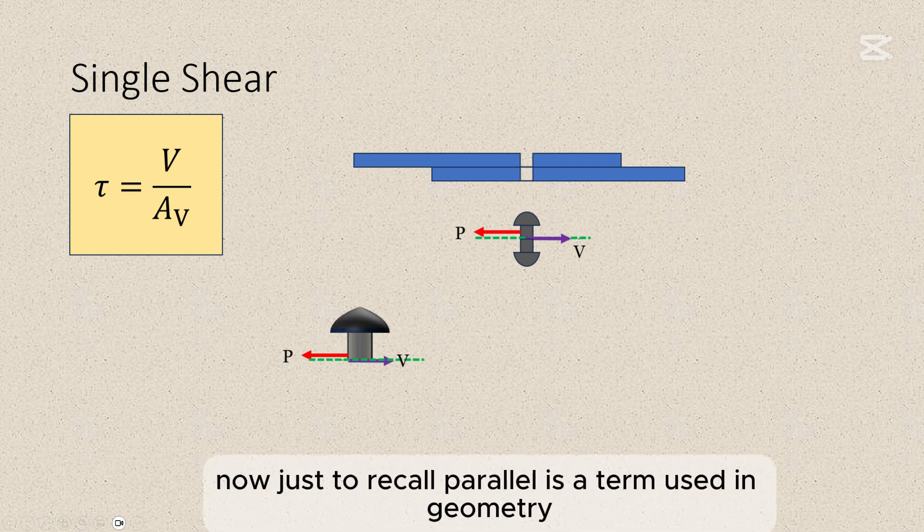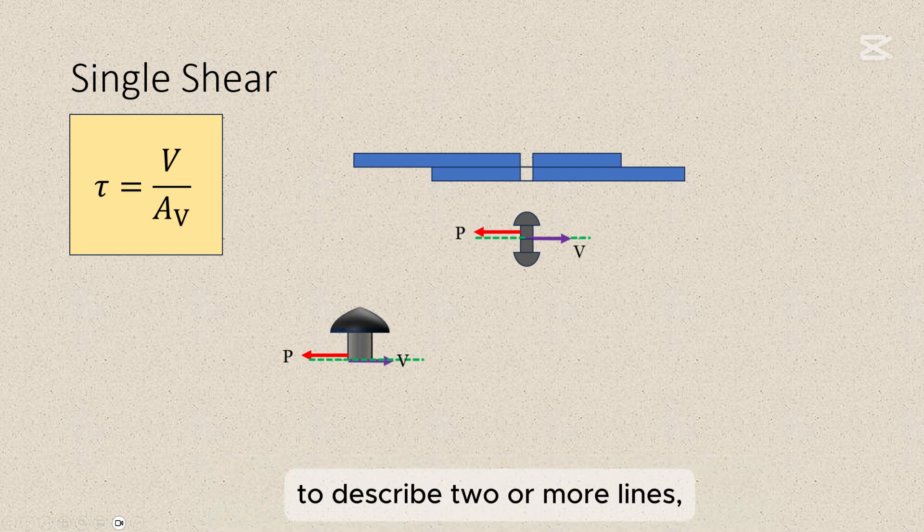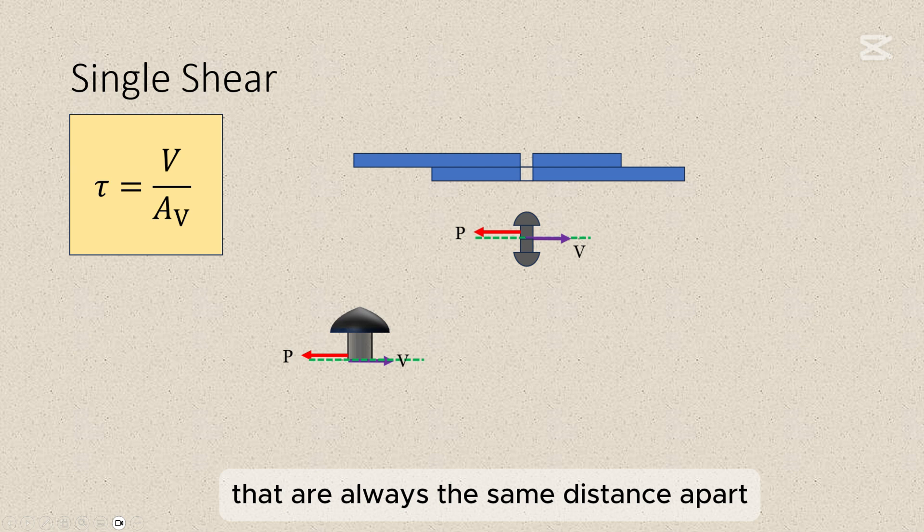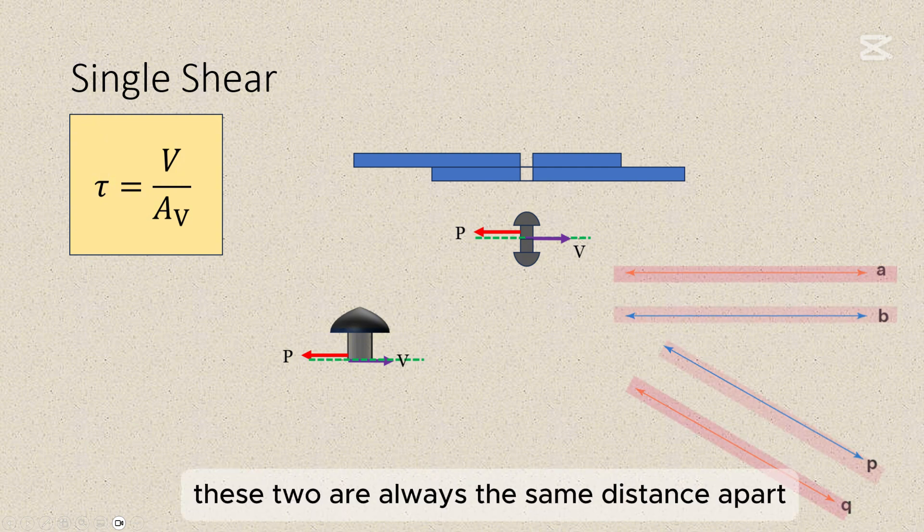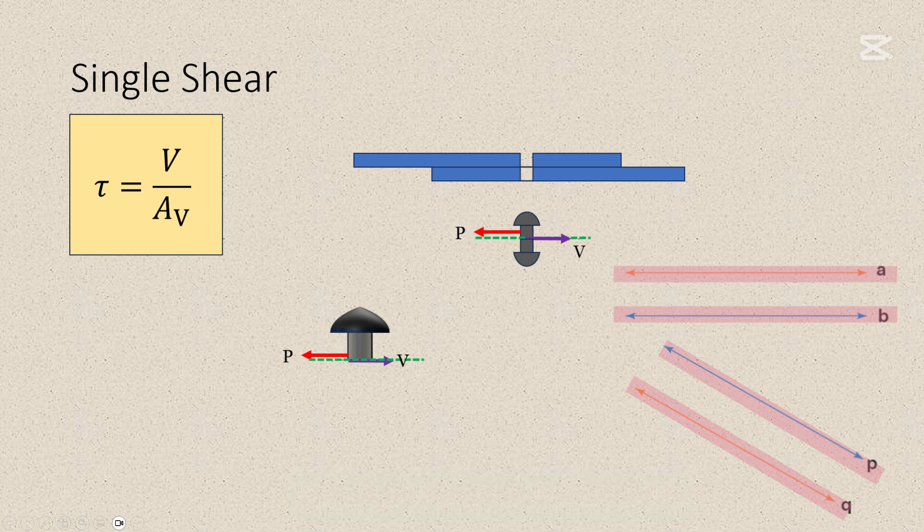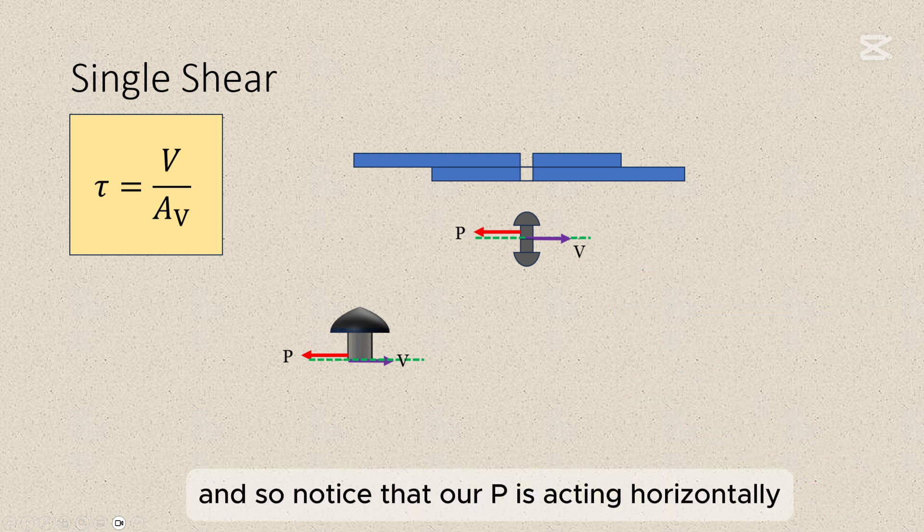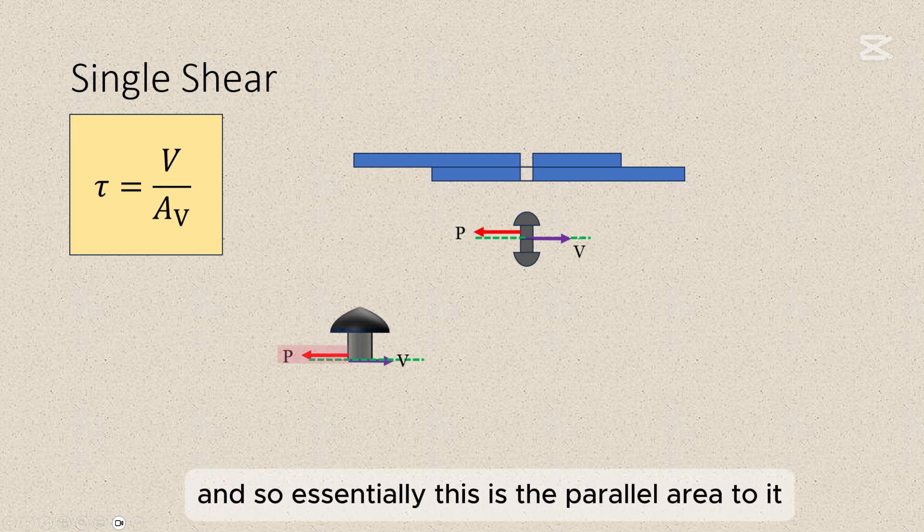Now just to recall, parallel is a term used in geometry to describe two or more lines, planes, or surfaces that are always the same distance apart and never intersect. Now if we have this line and this line, these two are always the same distance apart and never intersect, and thus they are parallel. And so notice that our P is acting horizontally and so essentially this is the parallel area to it.